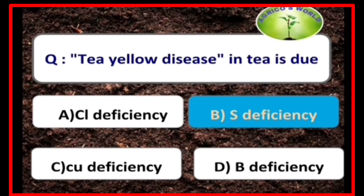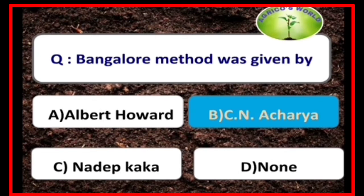TLO disease in tea is caused due to the deficiency of sulphur. Bangalore method was given by the scientist C.N. Acharya, and it is completely anaerobic in nature.